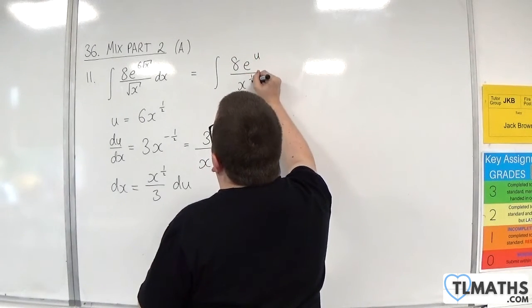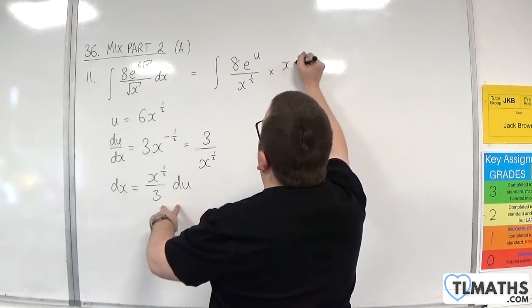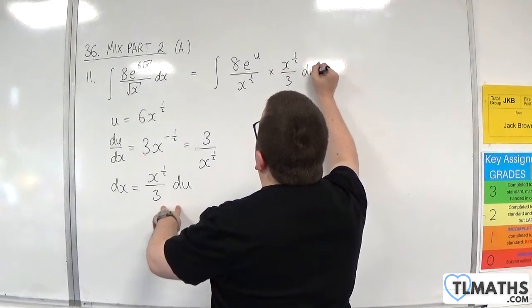Then the dx is replaced with this, so x to the half over 3 du. The x to the half's cancel.